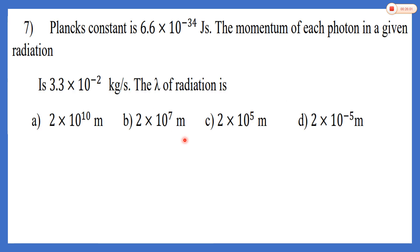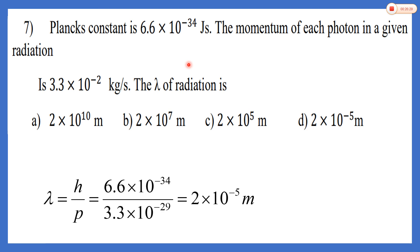Seventh MCQ: Planck's constant is 6.6 × 10⁻³⁴ J·s and the momentum of each photon is 3.3 × 10⁻²⁹ kg·m/s — find the wavelength of radiation. Using the De Broglie relation: lambda equals h upon p. With h equal to 6.6 × 10⁻³⁴ and p equal to 3.3 × 10⁻²⁹, the answer is 2 × 10⁻⁵ meters. That is the correct answer.